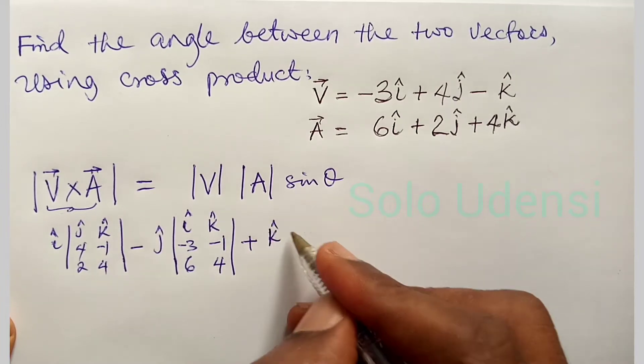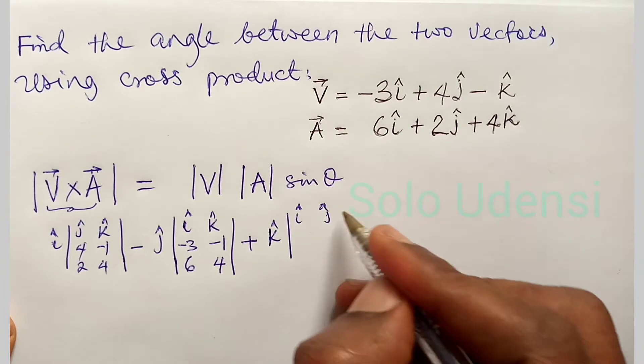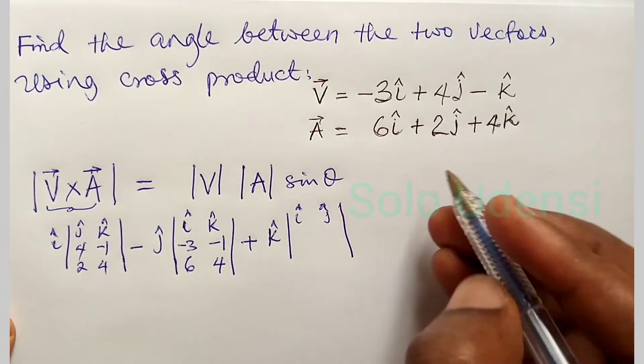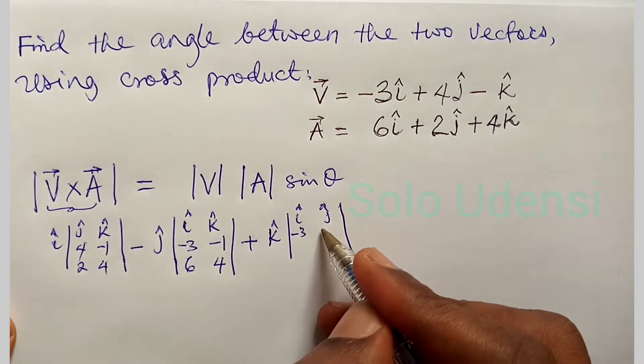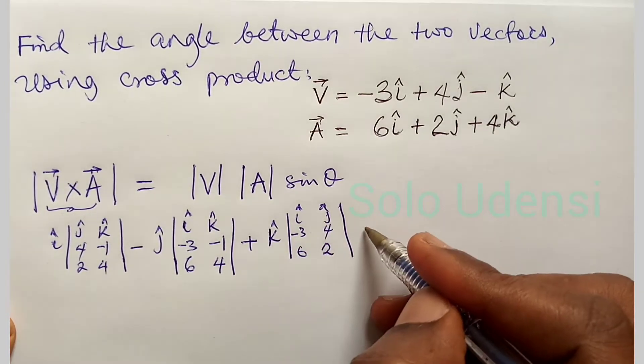Plus k hat, i, j hat. So it will be minus 3, 4, 6, 2. Minus 3, 4, 6, 2. So it's equal to,